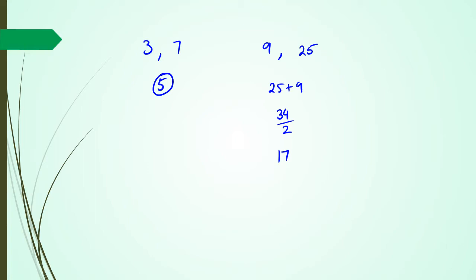In fact, to find the middle of any two numbers you add them up and divide by two. Say if I've got between 10 and 101 — when I add them up I get 111, and 111 divided by 2 is 55.5. So 55.5 is the number between 10 and 101. This is what you're going to need to figure out the midpoint between two points.